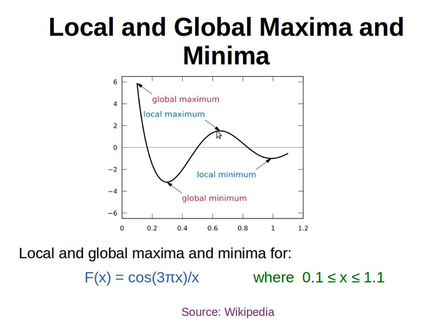A point can also be considered a maximum in a particular region — the highest value of y in that area — because y increases, stops increasing, then decreases. That can be seen as a maximum, but it's not the overall maximum. If we search only in that local space, we call it the local maximum. Looking at the overall space gives us the global maximum. Similarly, a local minimum is the lowest point in a restricted area, while the global minimum is the lowest point across the entire space.